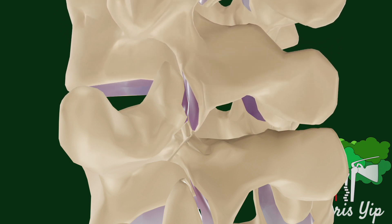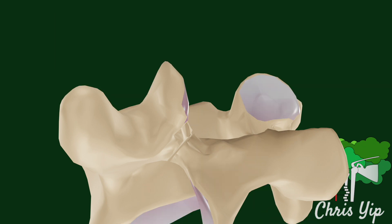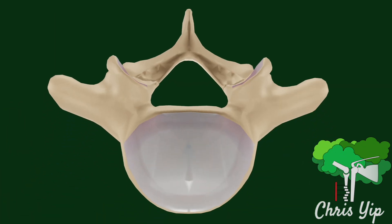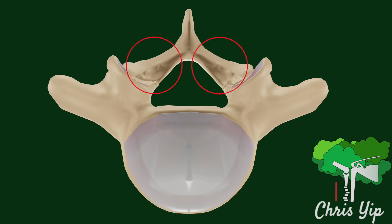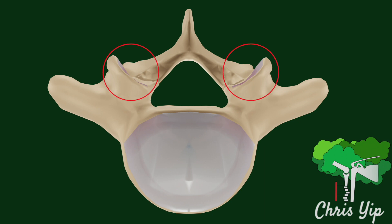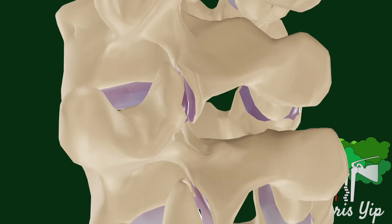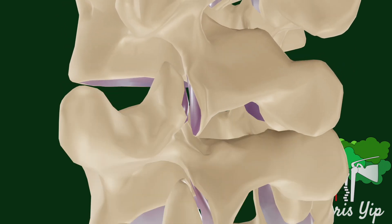Just a quick reminder on the lumbar vertebral anatomy: the lumbar vertebra consists of the vertebral body, the transverse processes, the lamina and the spinous process, and the superior and inferior articular processes, which articulate with adjacent vertebra to form the facet joints.